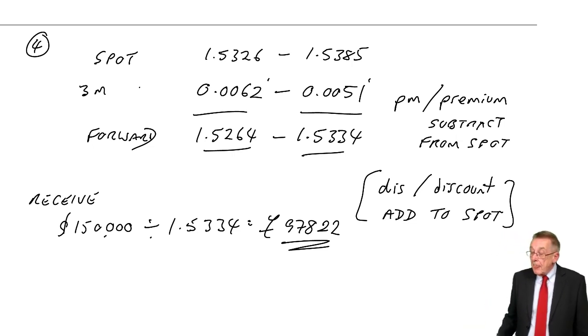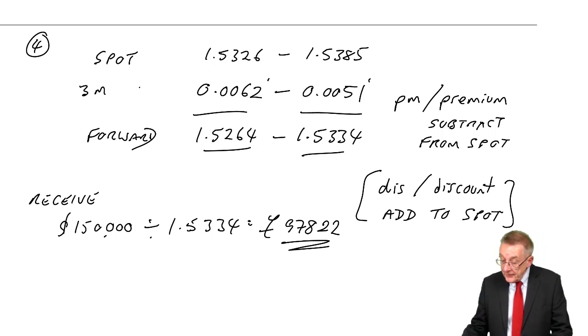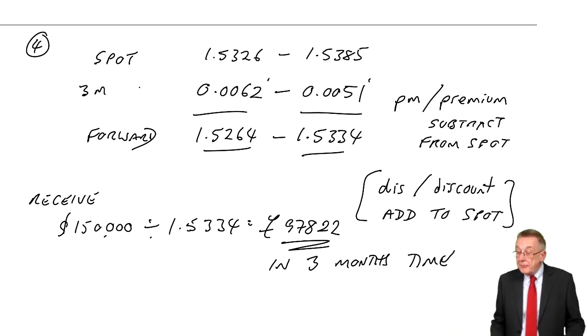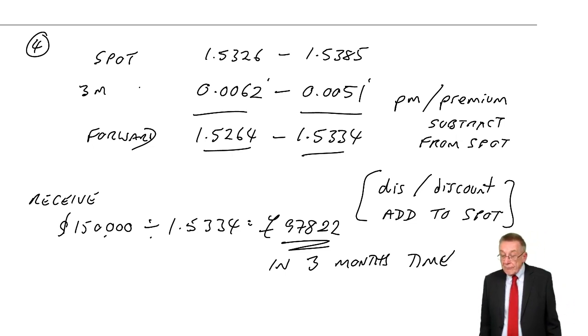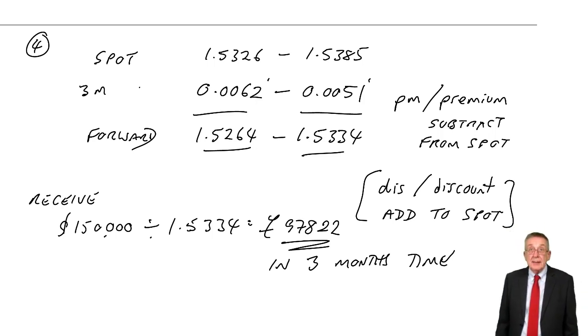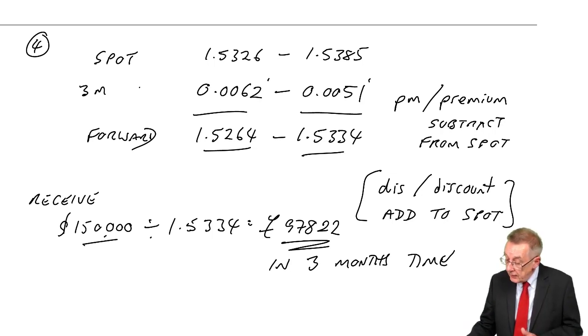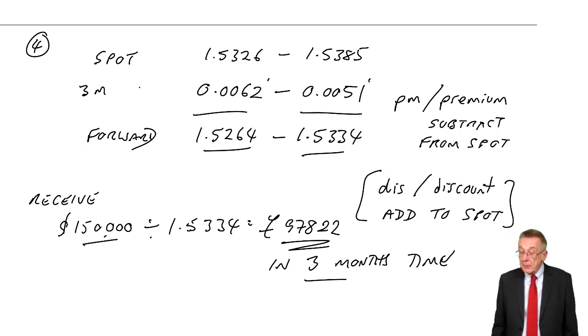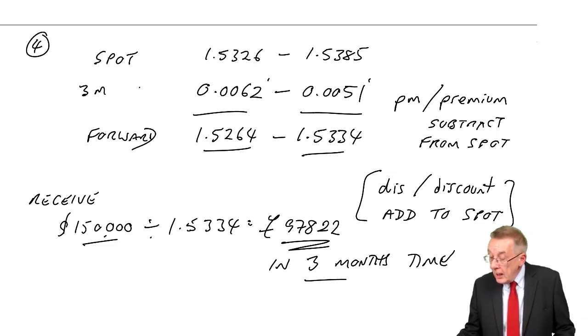But again, once we've got the forward rate, we would then have to convert at that rate. We'd have to convert $150,000. It would have to be done in three months' time. And again, the same problem as before. That's fine. But what happens if the customers are late paying? What happens if they take four months to pay? We have to convert the dollars in three months' time, which would mean we'd have to buy some dollars just to be able to convert. And that's the downside. But provided we're certain of the amount and we're certain of the time, no problem.